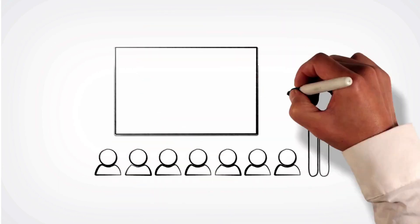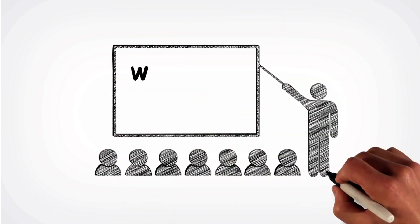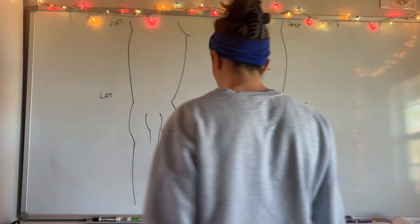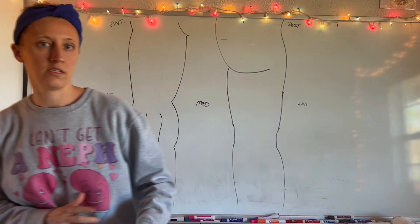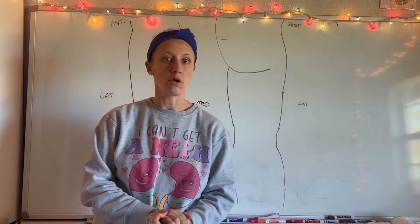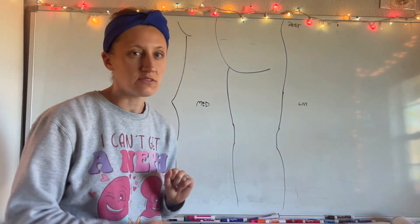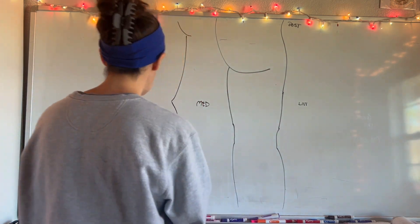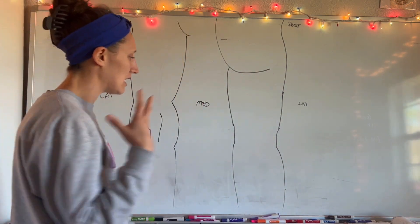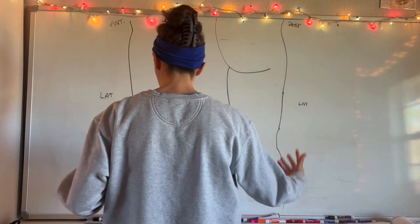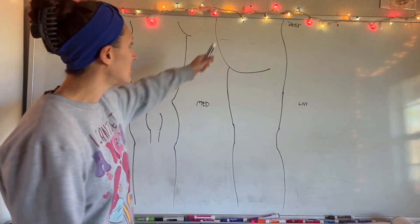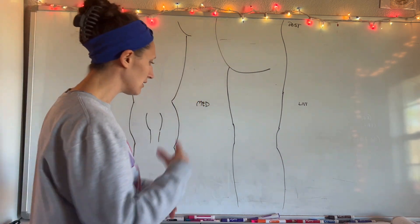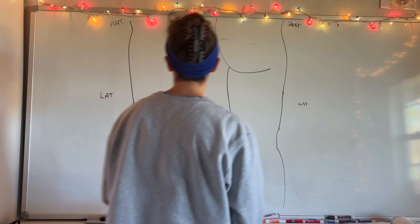Welcome to another whiteboard walkthrough. Today we are applying the lumbosacral plexus to the lower limb to see where all those nerve branches end up. You should have just watched the lumbosacral plexus breakdown first — check it out now if you haven't, because it's very important to watch that before this. Now we're going to see what it looks like in the body, what landmarks we need, and we'll start in the gluteal region. First, I'm going to label the different regions.